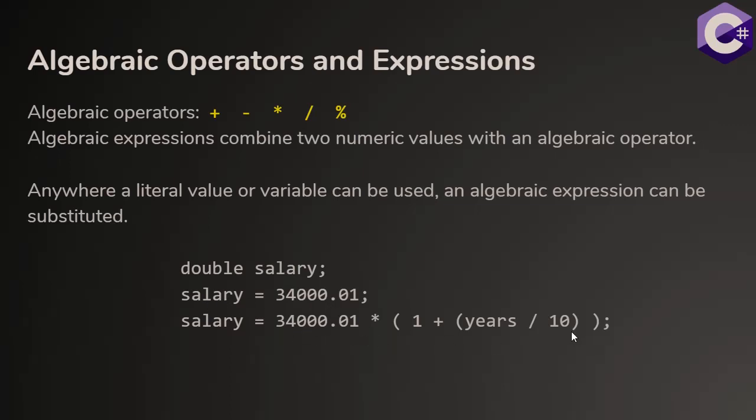This is a complex expression where if we have an expression with parentheses, we go to the innermost parentheses and we resolve this expression first. So here I'm taking some value of years, dividing it by 10, and I get a result. Then I'm going to take that value, add it to one. I have a second expression. I'm going to resolve this value down to a value. Then I have a third expression, 3400 times whatever this result is. Once my expression has been resolved down to a value, I can store that value into the variable.